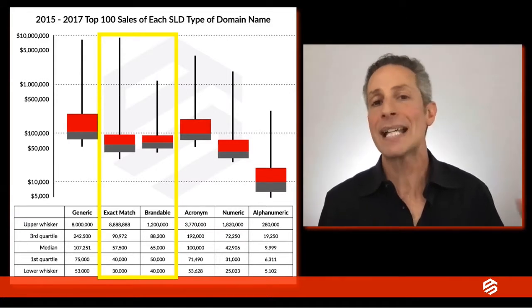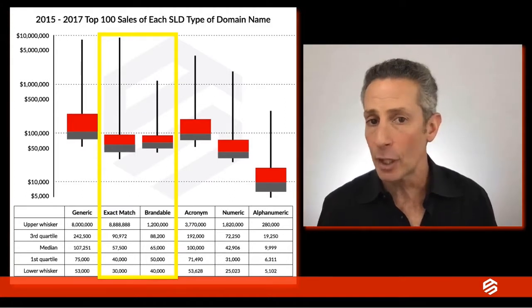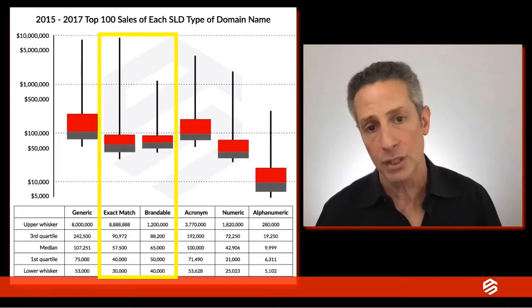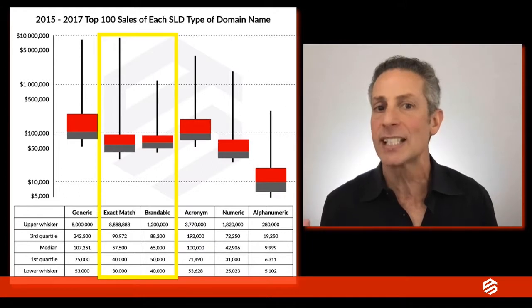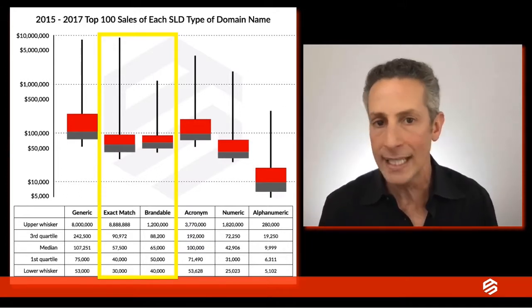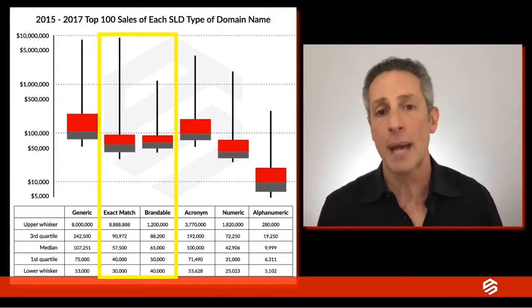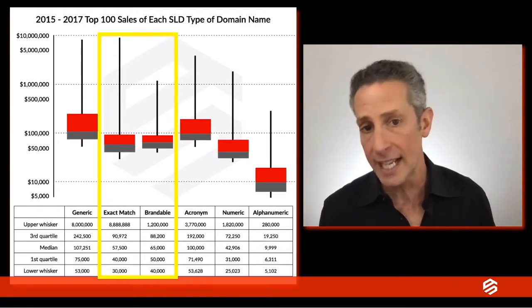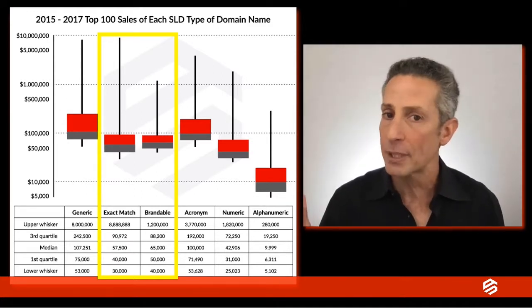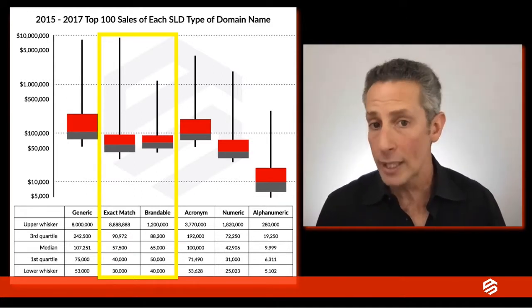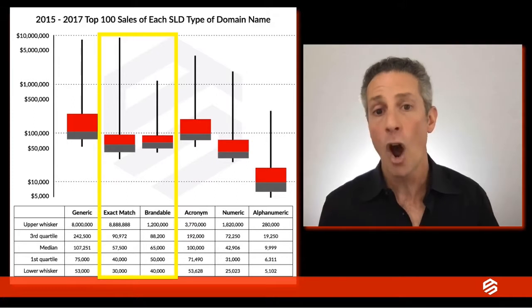Now let's compare exact match domain names to brandable domain names. Look at the boxes — they appear to be pretty similar. The tops of the boxes are within $2,000 of each other and the bottoms are within $10,000. But we can also see that the variation in sales prices is smaller for brandables like starindia.com, nextfoods.com, and ucoin.com than it is for exact match domain names like usedcardsforsale.com, yogapants.com, and collegeprep.com. The top 25% of exact match domain names has a long whisker because some keywords have massive search volume like porno.com and home.loans.